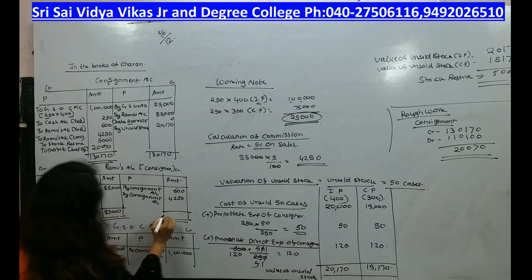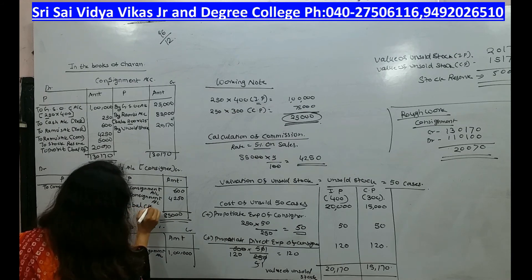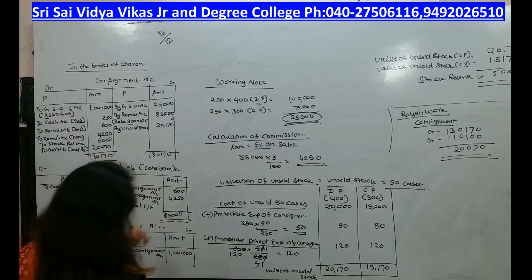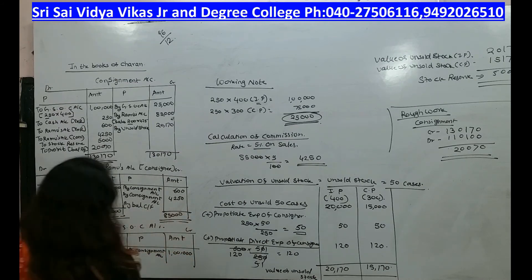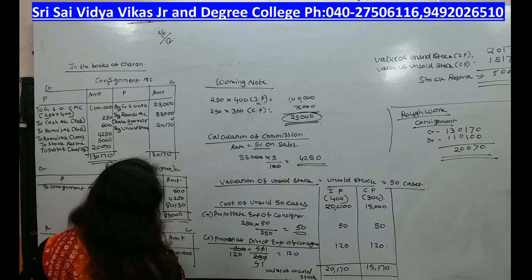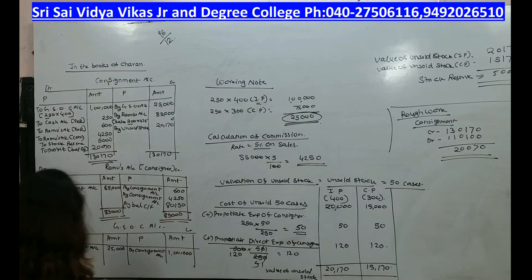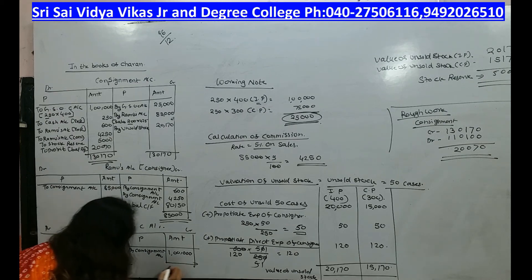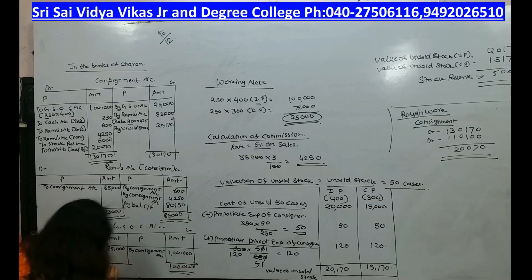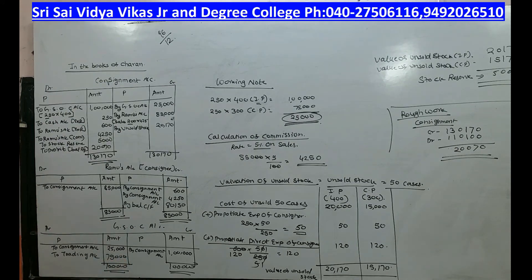In Ramu's account: sales 85,000, balance carried forward — 85,000 minus 4,850 equals 80,150. The amount of 80,150 is the balance due from Ramu. To the trading account we transfer: 1,00,000 minus 25,000 equals 75,000.